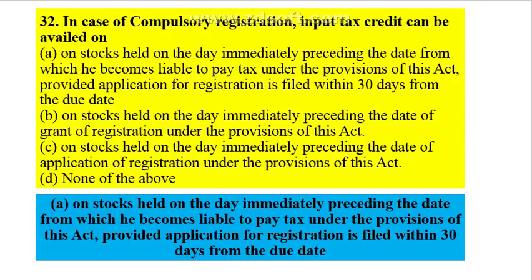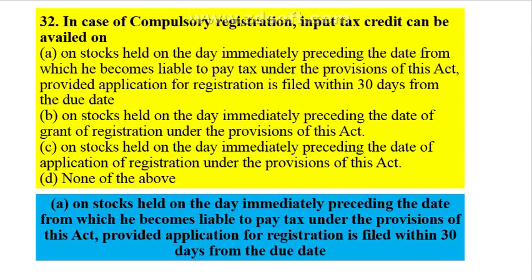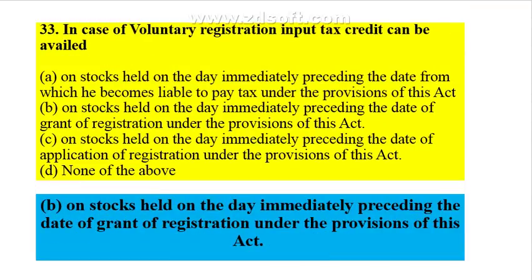In case of compulsory registration, input tax credit can be availed on stocks held on the day immediately preceding the date from which he becomes liable to pay tax, provided the application for registration is filed within 30 days from the due date. In case of voluntary registration, ITC can be availed on stocks held on the day immediately preceding the date of grant of registration.